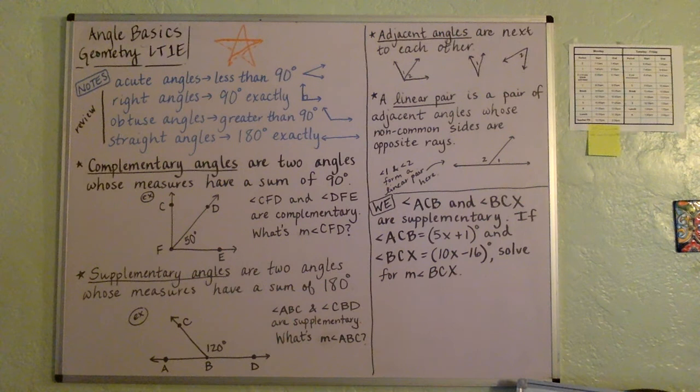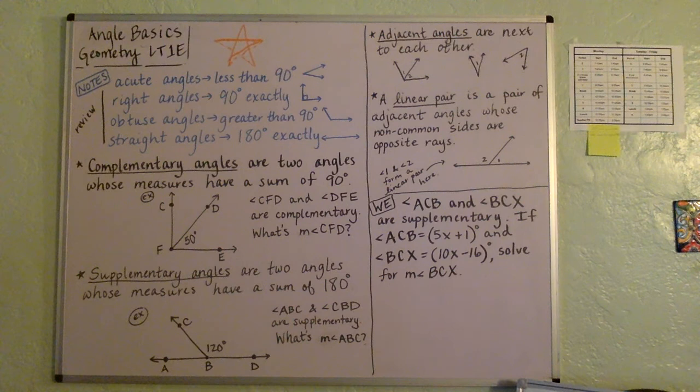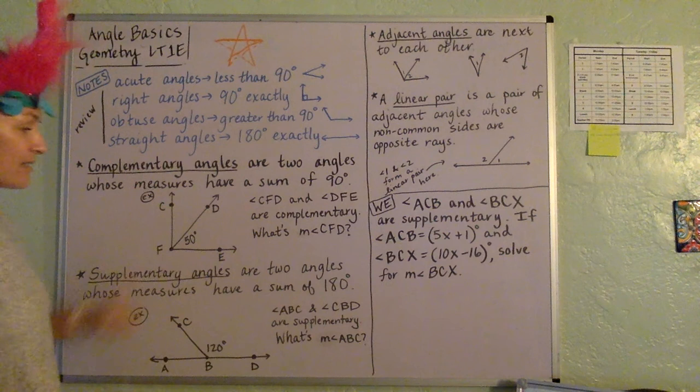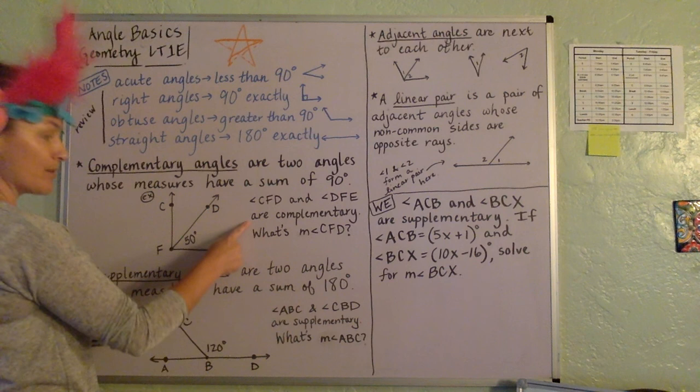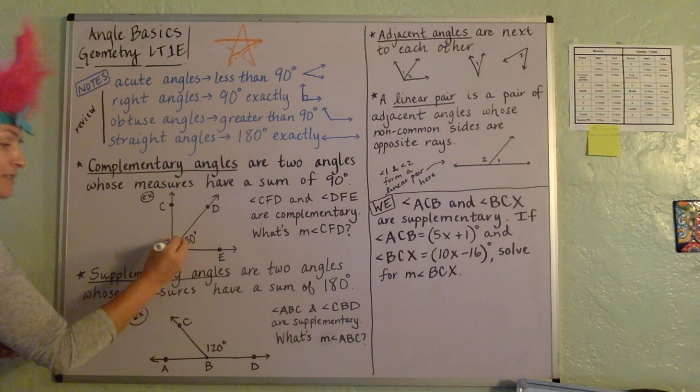There are two angles whose measures have a sum of 90 degrees. So take a look at this diagram right here. If I tell you that CFD and DFE are complementary, so these two together, complementary angles sum to 90, that means you can assume this is going on. What's the measure of angle CFD?